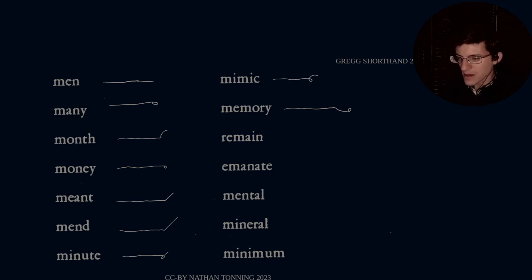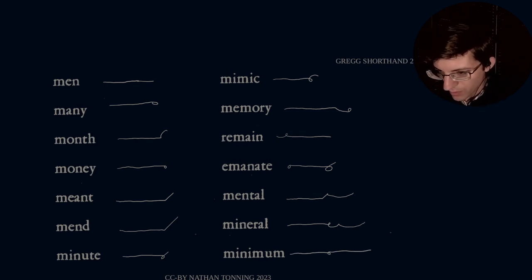And then remain. Remain. Emanate is E-M-M-A-T. Emanate. Mental is M-M-T-L. Yes. Mineral is M-M-R-L. Mineral. R-L. So M-N-E-R-L. Mineral. Minimum is simply the long M-N stroke. E, long M-N stroke. So there are our strokes for the consonant blends.